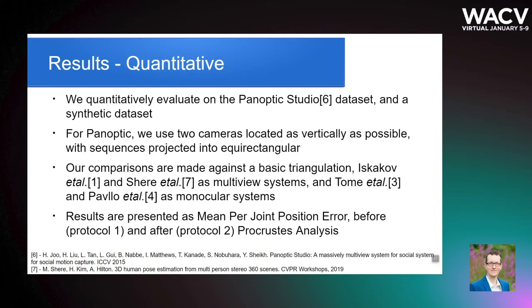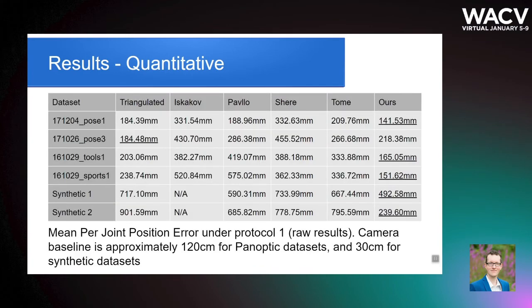Our Protocol 1 results are mean per joint position error using raw joint locations, while Protocol 2 measures MPJPE after performing Procrustes analysis. For Protocol 1, we produce reasonable results, particularly given the low baseline distance of 30cm on the synthetic dataset. Monocular systems also tended to perform well; however, the multi-view systems performed poorly, potentially due to requirements for horizontally displaced cameras and/or larger baselines.